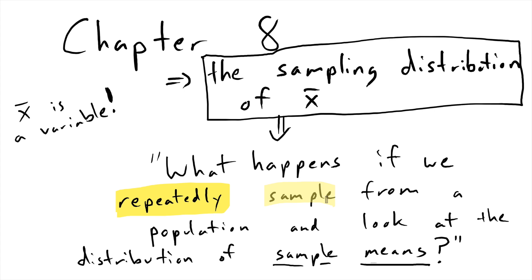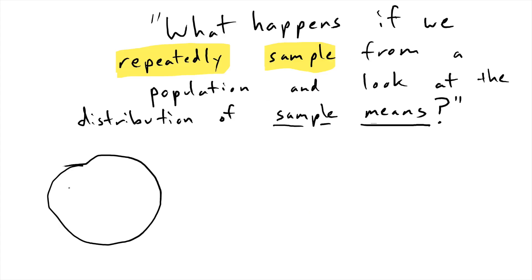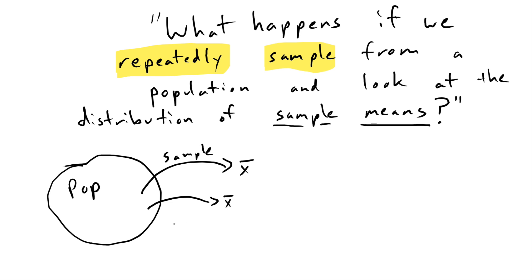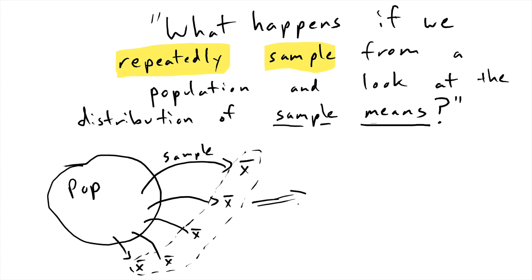X-bar changes. If we repeatedly sample, we don't get the same x-bar every time. I have imagined that I have my big population here. What I'm going to do is take a sample, find the average of that sample, then take another sample and find another average, and keep doing this — repeated sampling. If I take all these sample means and look at a distribution of them, that distribution is what we call the sampling distribution of x-bar.